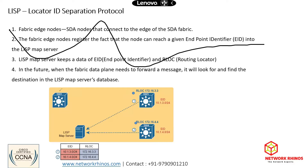Imagine we have switch one, switch three, and switch four. Switch three has an RLOC IP. RLOC means routing locator — it is like your router ID in OSPF. In OSPF we have something called router ID, right? Similarly in LISP that is termed as RLOC.